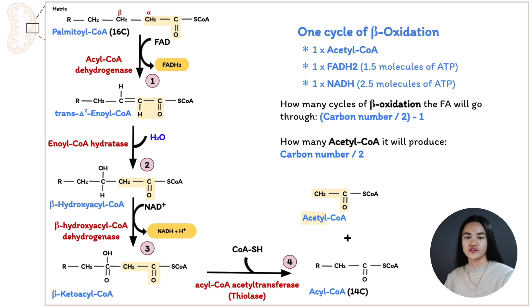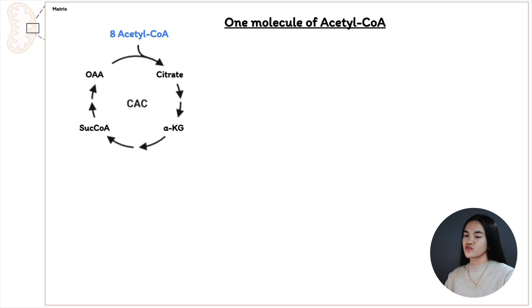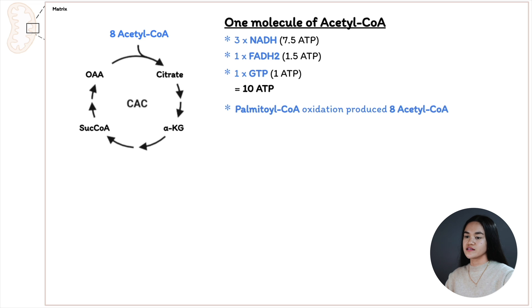Now let's move on to the second stage of fatty acid oxidation: the acetyl-CoA produced in beta-oxidation enters the citric acid cycle. If you haven't seen the citric acid cycle lecture, go ahead and do that, as we won't cover it here. For one acetyl-CoA entering the citric acid cycle, we produce three NADH (7.5 ATP equivalent), one FADH2 (1.5 ATP equivalent), and one GTP (converted to ATP) — a total of 10 ATP per acetyl-CoA. Since beta-oxidation of palmitoyl-CoA produced 8 acetyl-CoA, we get 80 ATP from the citric acid cycle.